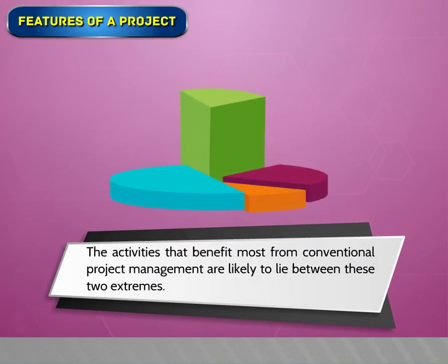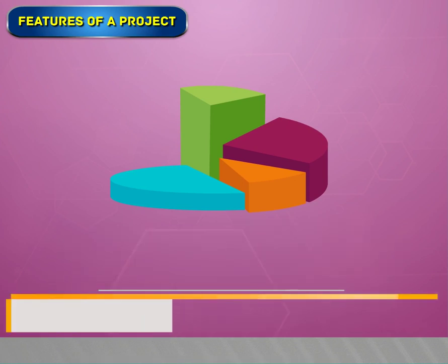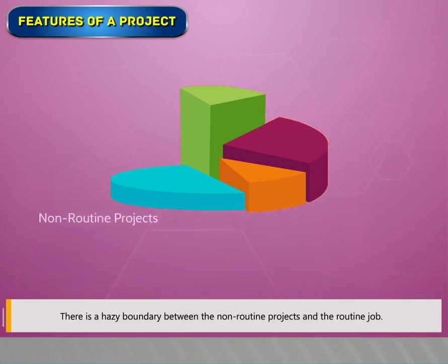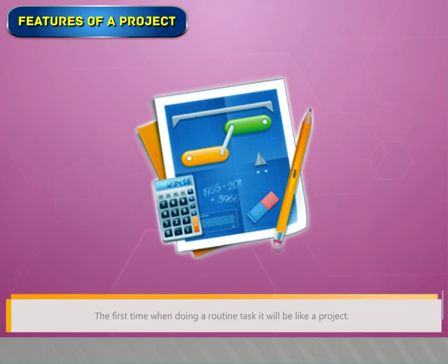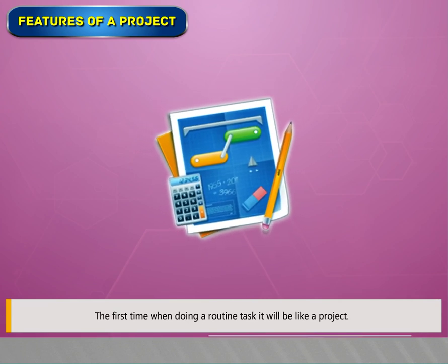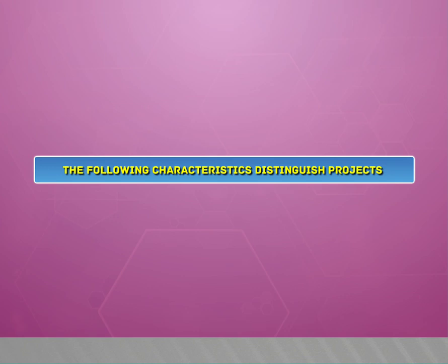The activities that benefit most from conventional project management are likely to lie between two extremes. There is a hazard boundary between non-routine projects and the routine job. The first time when doing a routine task it will be like a project. On the other hand, a project to develop a system similar to previous ones will have a large element of routine. The following characteristics distinguish projects.